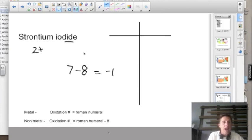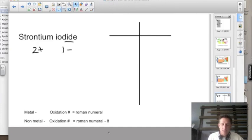Strontium is a two plus, iodine is a one minus. Let's put this into the T-chart. Strontium has the symbol Sr and it has a two plus oxidation number. Iodine has a symbol of I, capital I, and it has a one minus oxidation number.